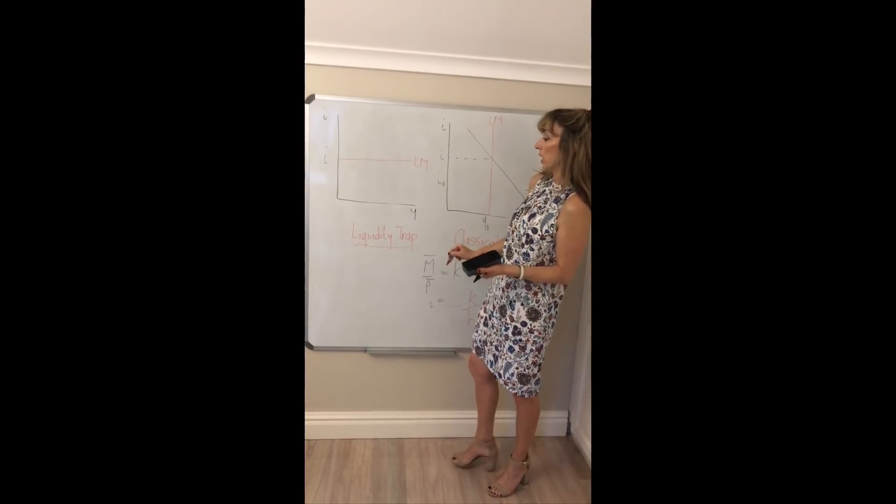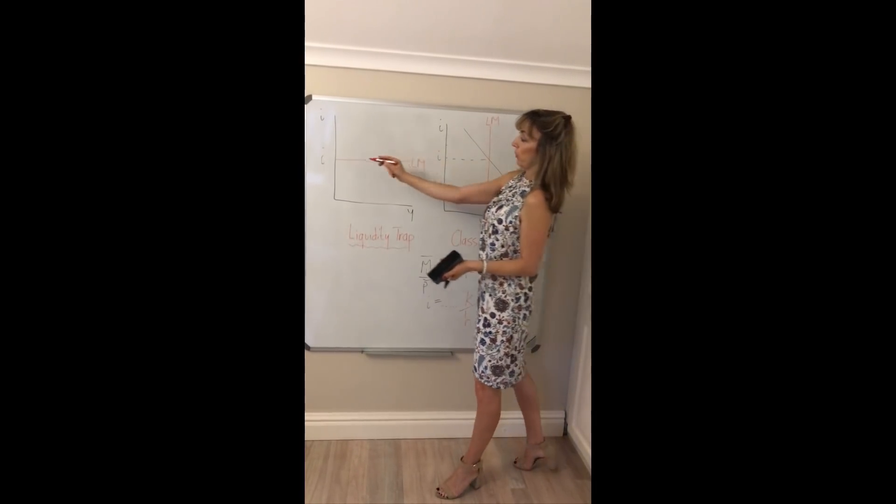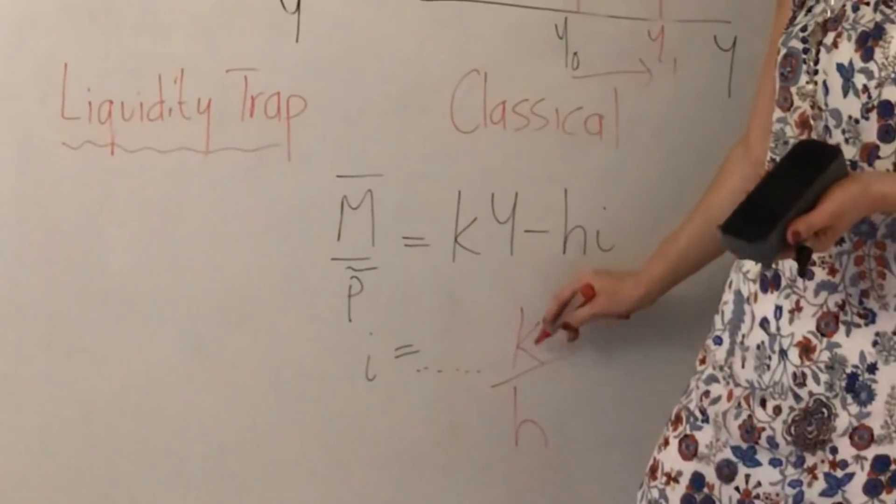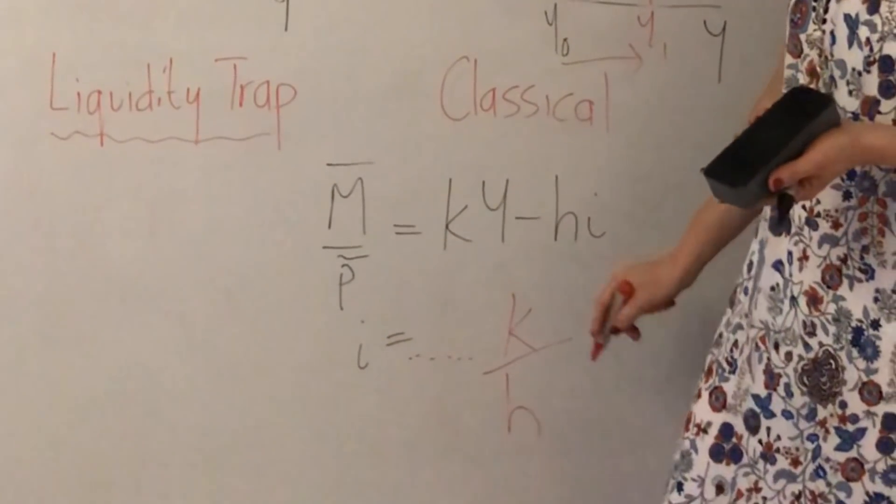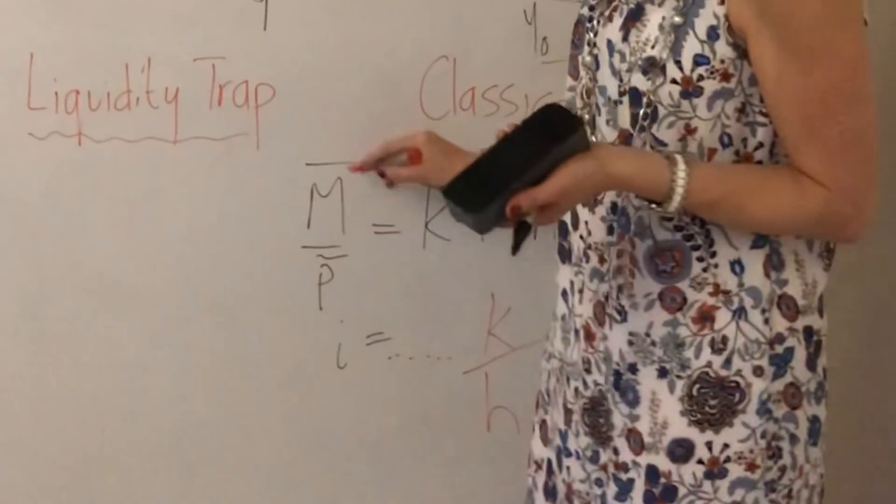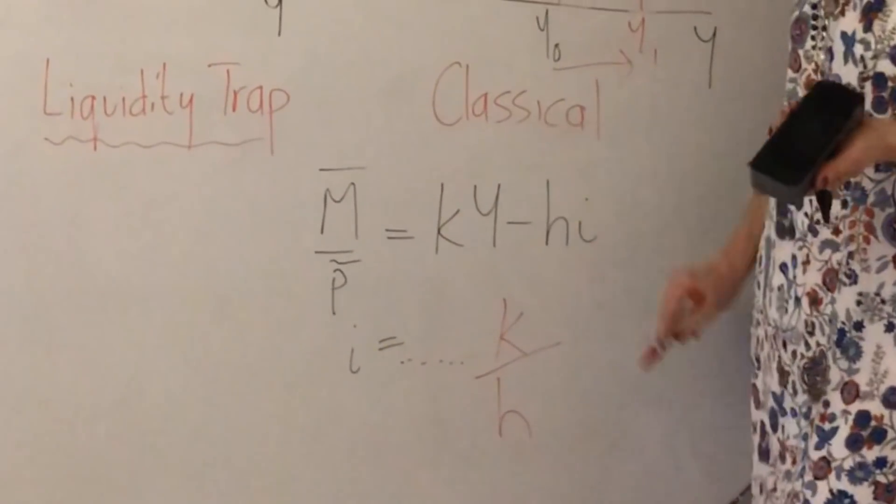We now want to look at two extreme cases where the LM curve is horizontal and where it's vertical. Remember we learned about K and H previously. So if you recall that money market equilibrium is where your money supply is equal to money demand.